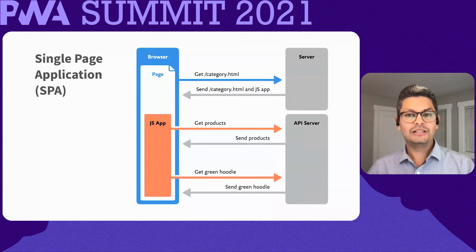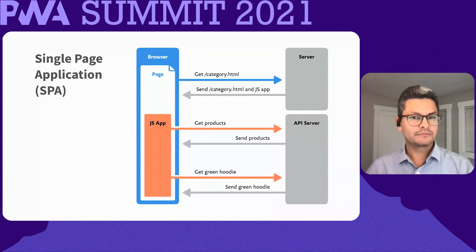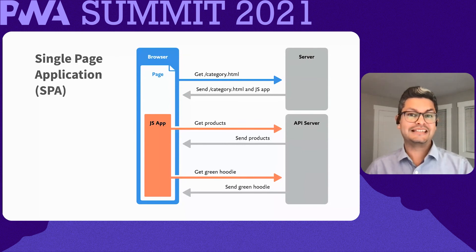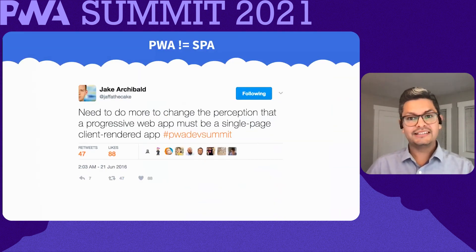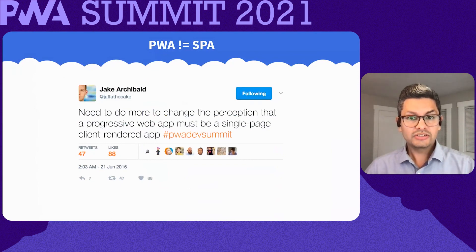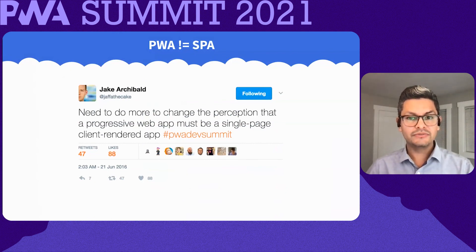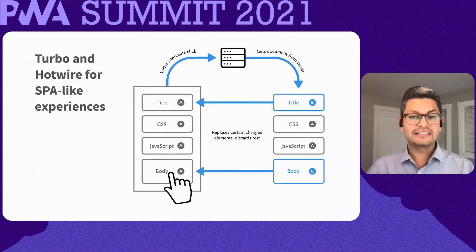In order to make something feel app-like, often people feel like they have to build a single page application using a JavaScript framework. This may make sense, but converting an existing multiple page application such as an e-commerce site to a single page application is no small task. And by the way, there's nothing that says that a PWA has to be a single page application. So don't assume that you have to convert to a SPA to have a PWA, especially if that conversion would be difficult for your organization. There are ways to create SPA-like experiences using multi-page applications.